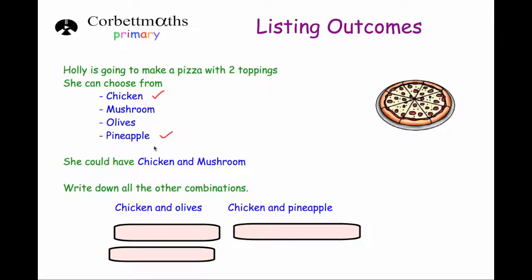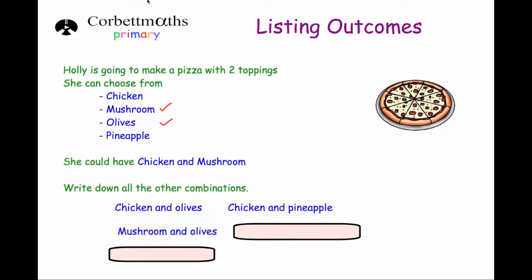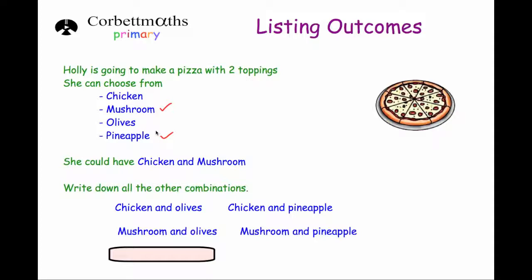Now let's move on to mushroom. We could have mushroom and olives, and we could also have mushroom and pineapple. Those are all the options with mushroom — we've already got chicken and mushroom covered. And finally, thinking of the options with olives, we could have olives and pineapple, and that's it.